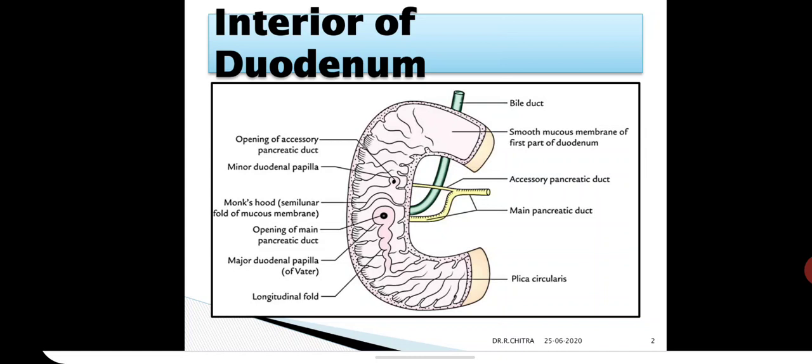Above the major duodenal papillae, there is a semilunar mucosal fold that resembles a monk's hood, called plica semicircularis. Another important point is the plica longitudinalis, a vertical fold extending downward from the major papillae. These are the important features we should note in the interior of the second part of the duodenum.